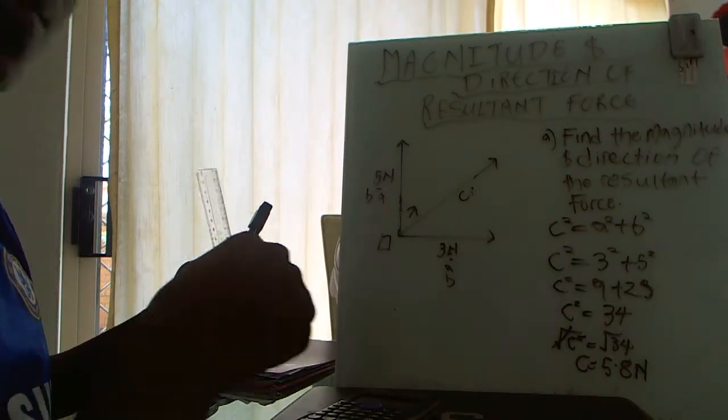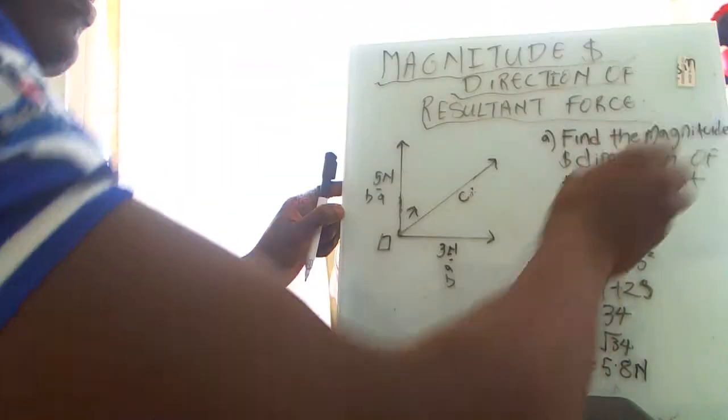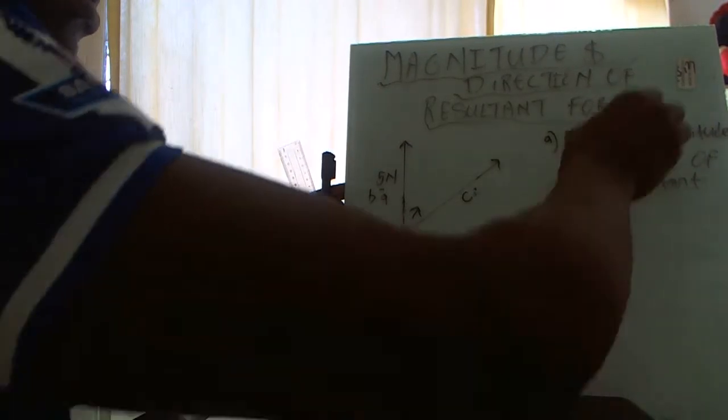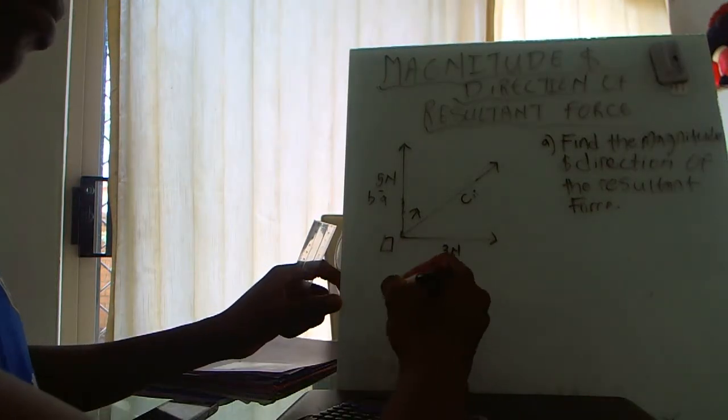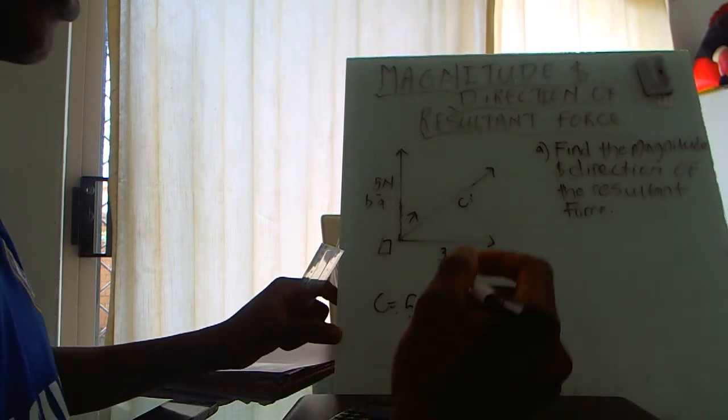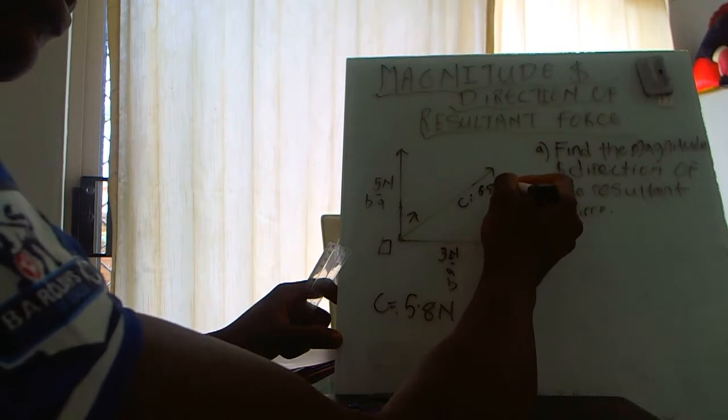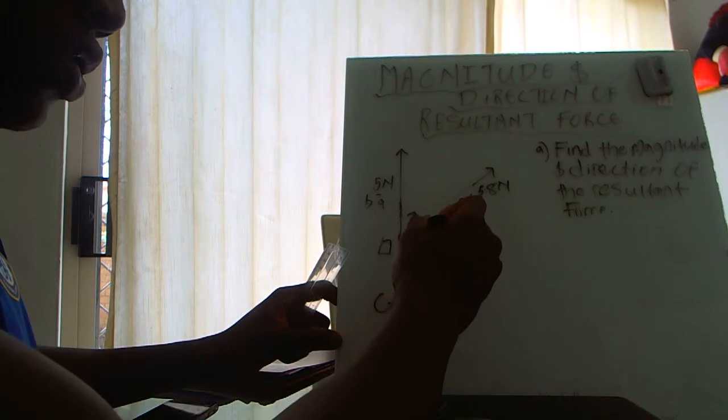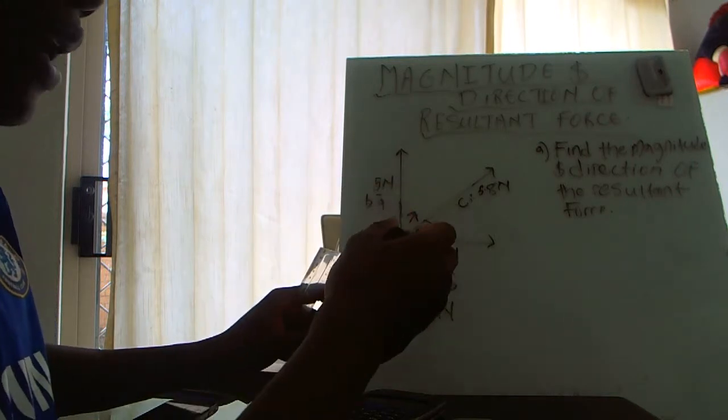Now we found the magnitude which was 5.8, and we now need to find the direction. Since we already have this 5.8, we need to find the direction, so we'll call this theta.